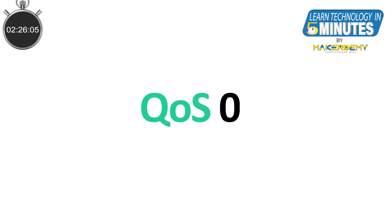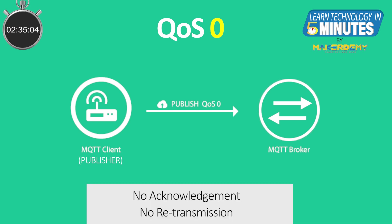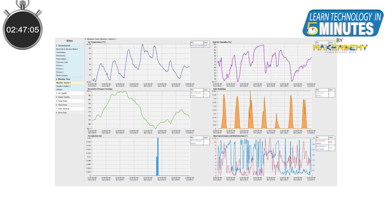Quality of service level 0 is equivalent to the best effort delivery model as discussed earlier. In this quality of service, there is no guarantee of delivery as there is no acknowledgement nor retransmission by the sender. QoS 0 is used in the following conditions: first, data is sent at very short intervals, so loss of some messages is acceptable — like in weather monitoring or pollution monitoring systems.